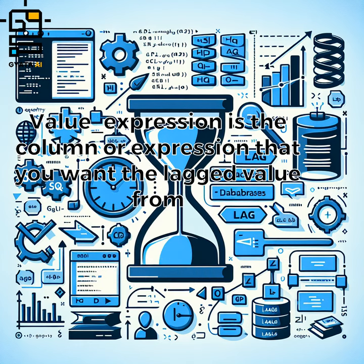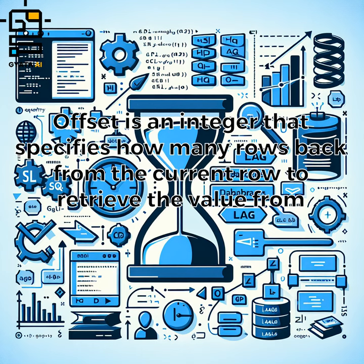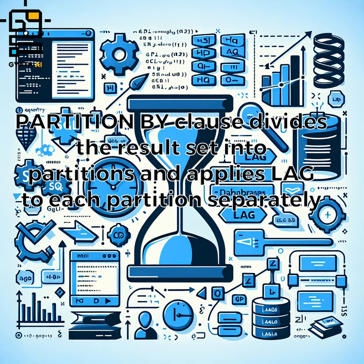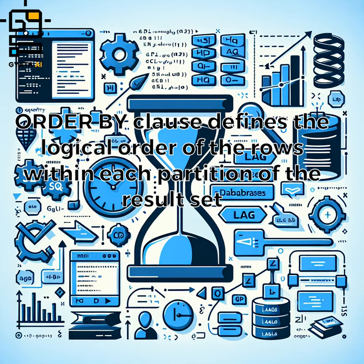Value expression is the column or expression that you want the lagged value from. Offset is an integer that specifies how many rows back from the current row to retrieve the value from. Default is a value to return if the offset goes beyond the scope of the result set. The PARTITION BY clause divides the result set into partitions and applies LAG to each partition separately. The ORDER BY clause defines the logical order of the rows within each partition.